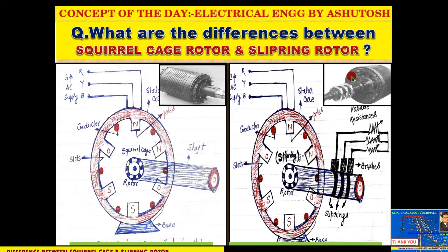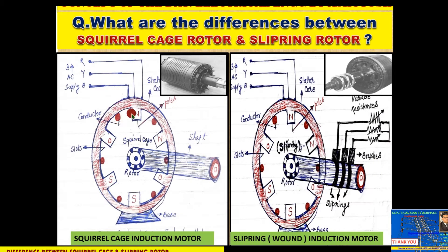Three-phase squirrel cage induction motors are widely used as industrial drives because they are self-starting, reliable, and economical. We are discussing the differences between squirrel cage rotor and slip ring rotor. In the diagram, on the left side is the construction diagram of the squirrel cage induction motor, and on the right side is the construction diagram of the slip ring or wound induction motor.